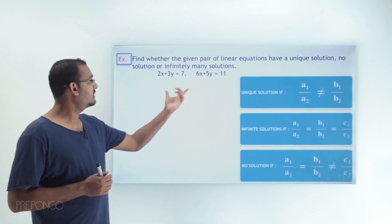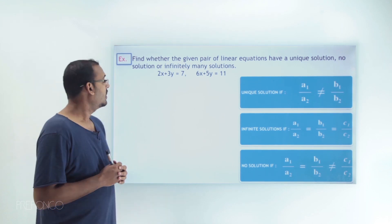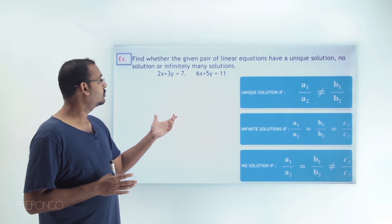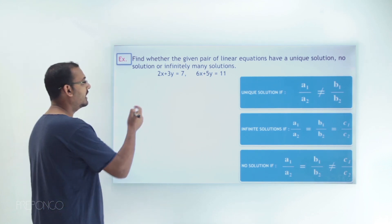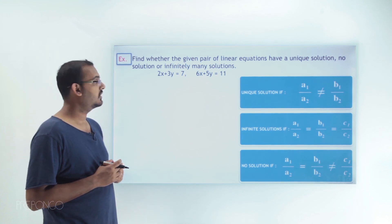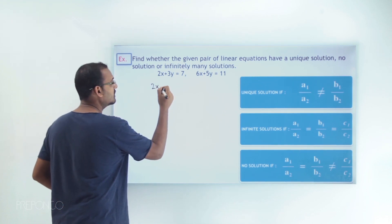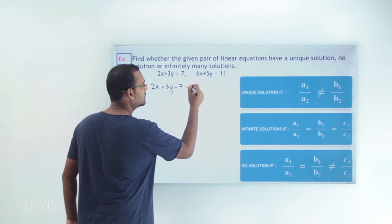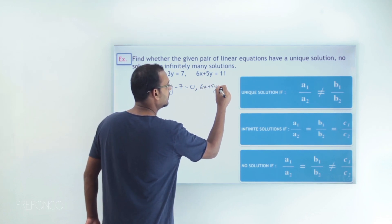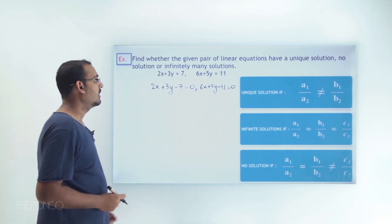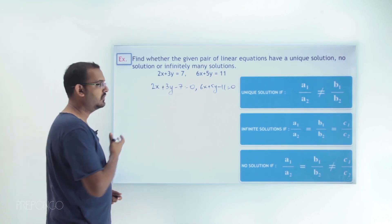So now let's take this pair of linear equations in two variables and figure out all the coefficients. Once we have all the coefficients, we'll put them into those conditions and see which condition is actually true. Let's first represent these linear equations in the general form. I can rewrite the first equation as 2x + 3y − 7 = 0, and the second equation as 6x + 5y − 11 = 0. Now both equations are in the general form of a linear equation in two variables.